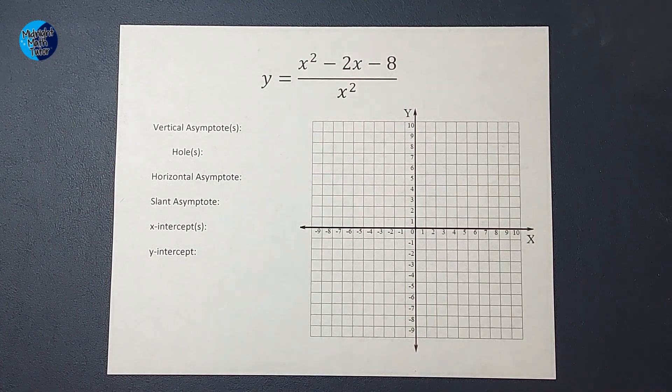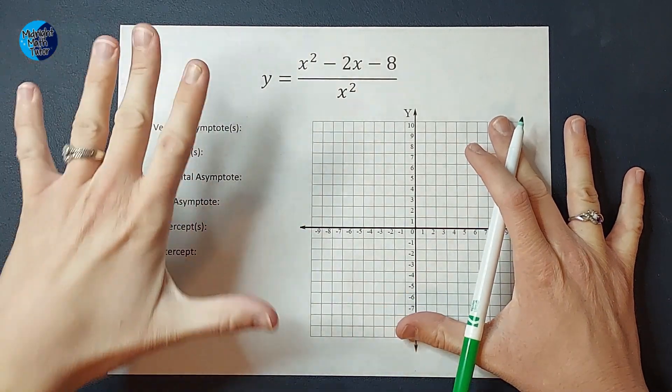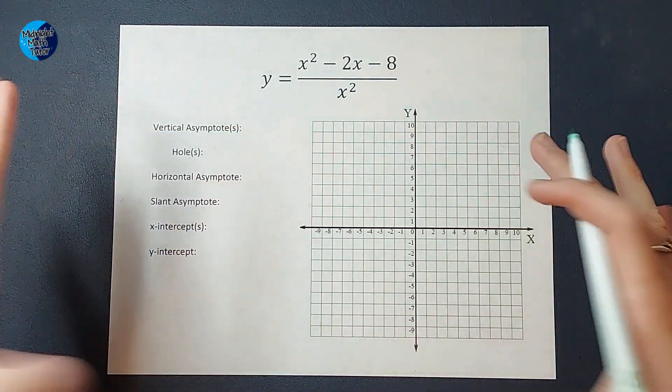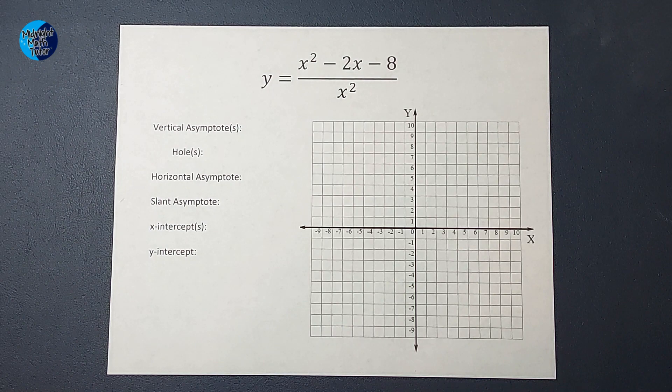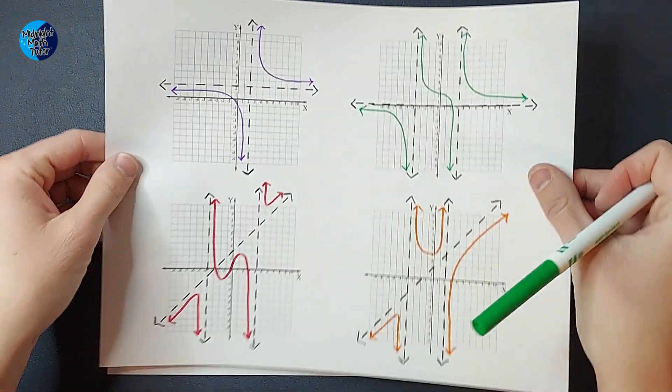Hey guys, we are going to graph a rational function and I know this might feel like a lot, but we're going to follow some very specific steps to help you figure out this graph.